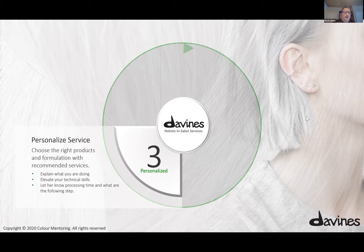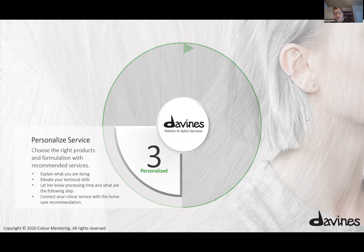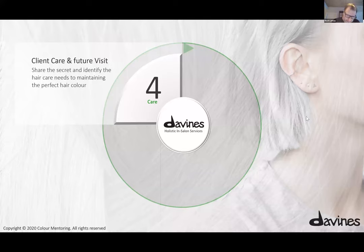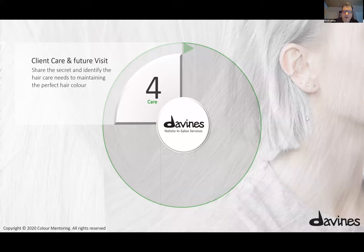Connect your client's services with the home recommended care system when you're done. This is where she has the experience of smelling the product and feeling its quality and performance. The fourth segment of the consultation disc is care — clients' care and future visit. Share the secret and identify the hair care needs to maintain the perfect color. The rule in retailing is always present three products needed for the hair — not just to present three, but for a specific reason. Usually with the rule of three, they often purchase all three or at least one.